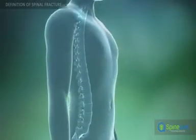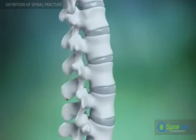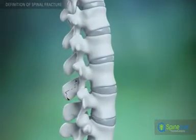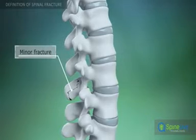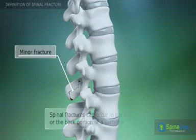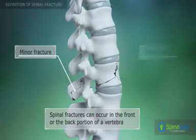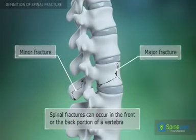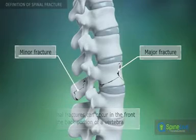There are several types of spinal fractures. Minor fractures occur when the posterior portion of the vertebrae has broken or cracked. Major spinal fractures occur in the anterior part of the vertebrae.